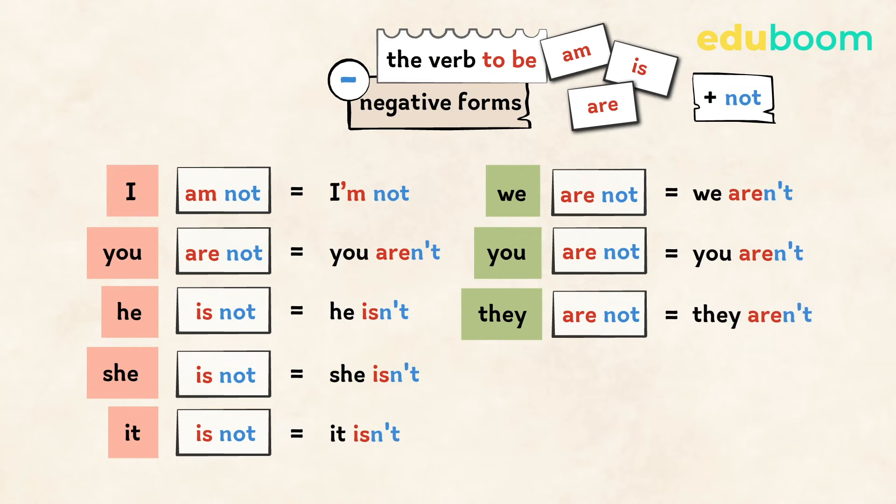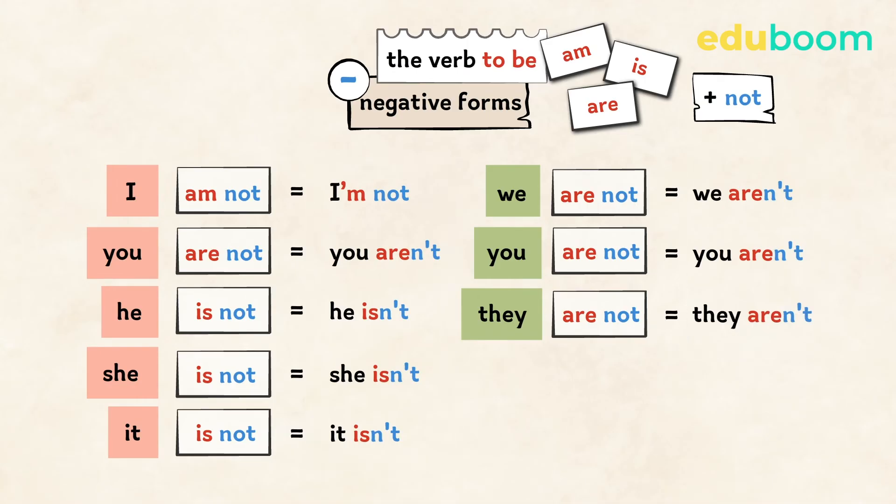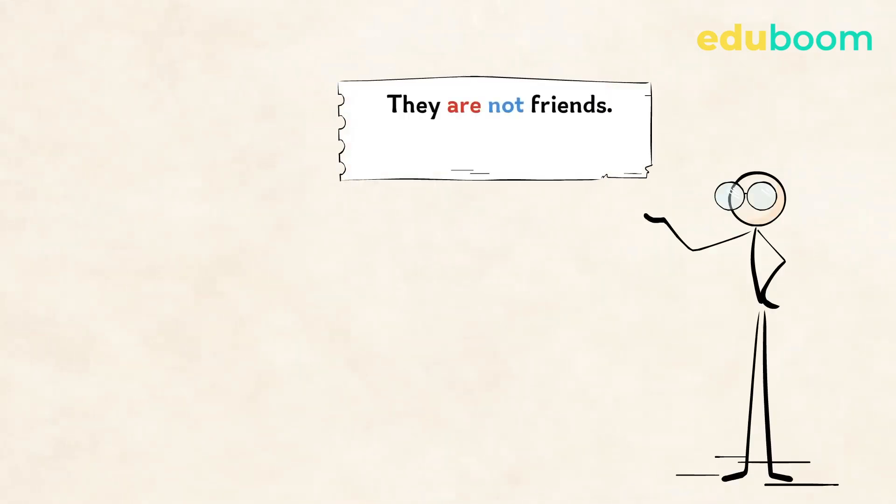So these are the short negative forms of the verb to be. You can use the short forms and the long forms. It's okay to say they are not friends, and it's okay to say they aren't friends.